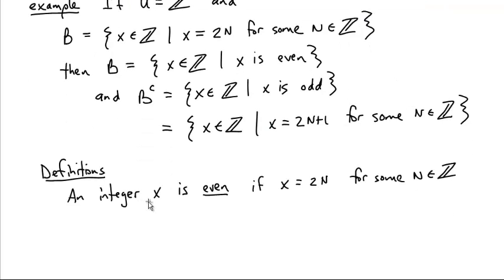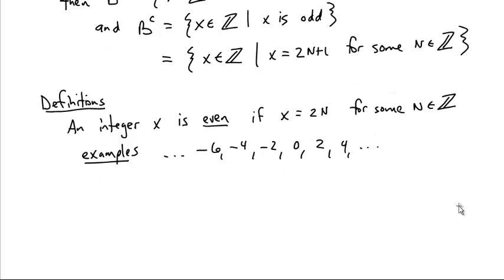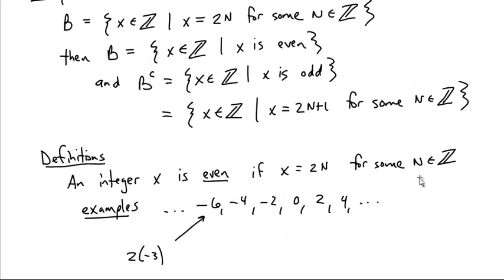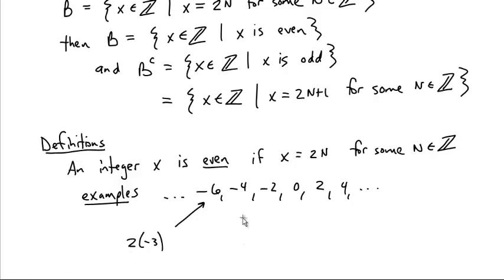Definitions. A number is even if it is 2 times some integer. Here are some examples of even numbers. Yes, that's right, 0 is an even number. Negative 4 is an even number. Negative 6 is 2 times negative 3. That's what it means to be an even number. It is 2 times some integer. Negative 3 is an integer, double it, negative 6. Negative 2 is 2 times negative 1. 0 is 2 times 0. If you are 2 times something, you're even. 0 can be looked at as 2 times something. 4 is 2 times 2.